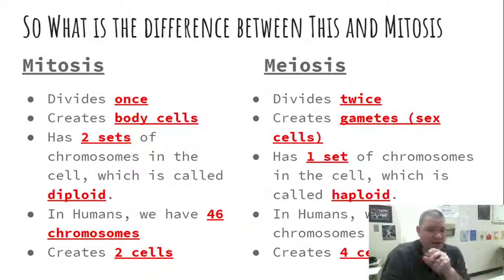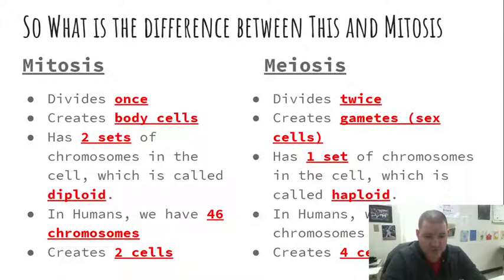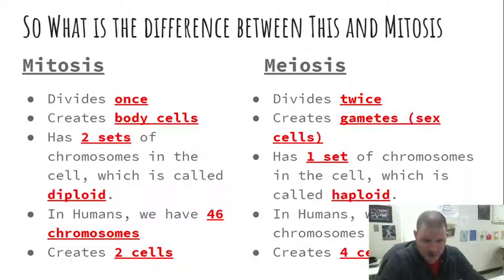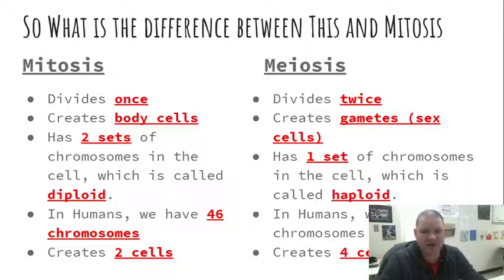For mitosis, it has two full sets of chromosomes — one coming from mom, one coming from dad. That is called diploid, because 'di' means two. Diploid refers to the chromosome count, so it is a two-matching set. In humans, that means these cells have 46 chromosomes, and mitosis creates two cells at the end.